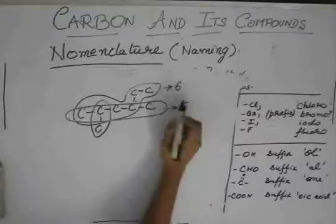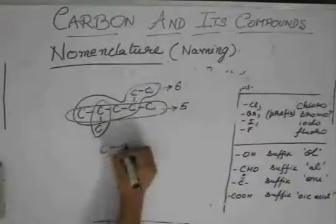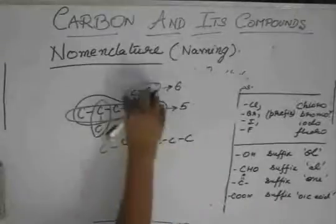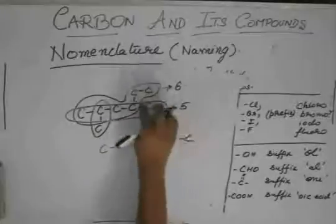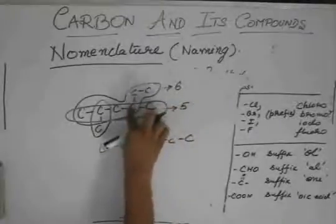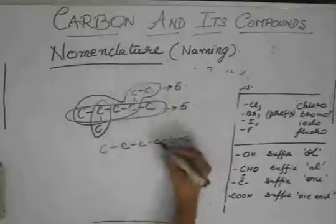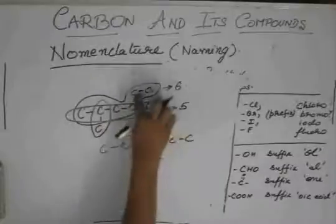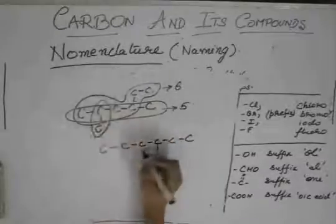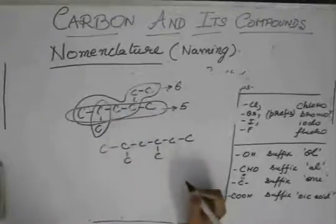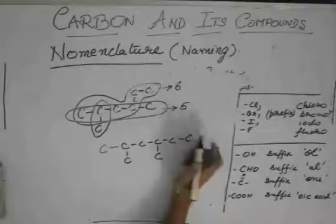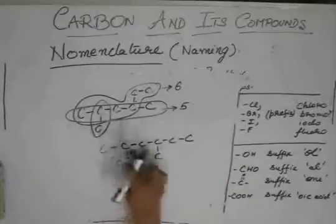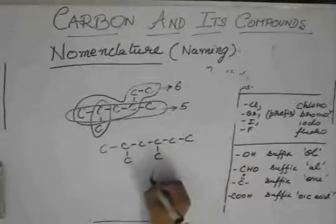So, this is the six-membered chain. Let us modify this structure a bit. This is the chain. If we start naming from here, one, two, three, the third carbon has one carbon branch or one methyl group. And then the fifth carbon has another methyl group. So, it's hexane.